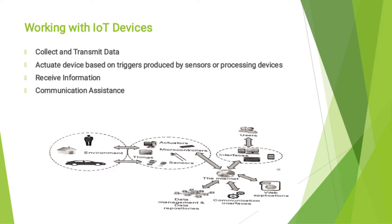Working with IoT Devices: First, we collect and transmit data. Devices are activated based on triggers produced by sensors or processing devices. If certain conditions are satisfied or according to the user's requirements, a trigger is activated and an action is performed by the activated devices. Users or devices can receive information from network devices for analysis and processing purposes. Communication assistance can be represented as communication between two networks or two or more IoT devices, achieved through protocols like Zigbee, FTP, HTTP, etc.